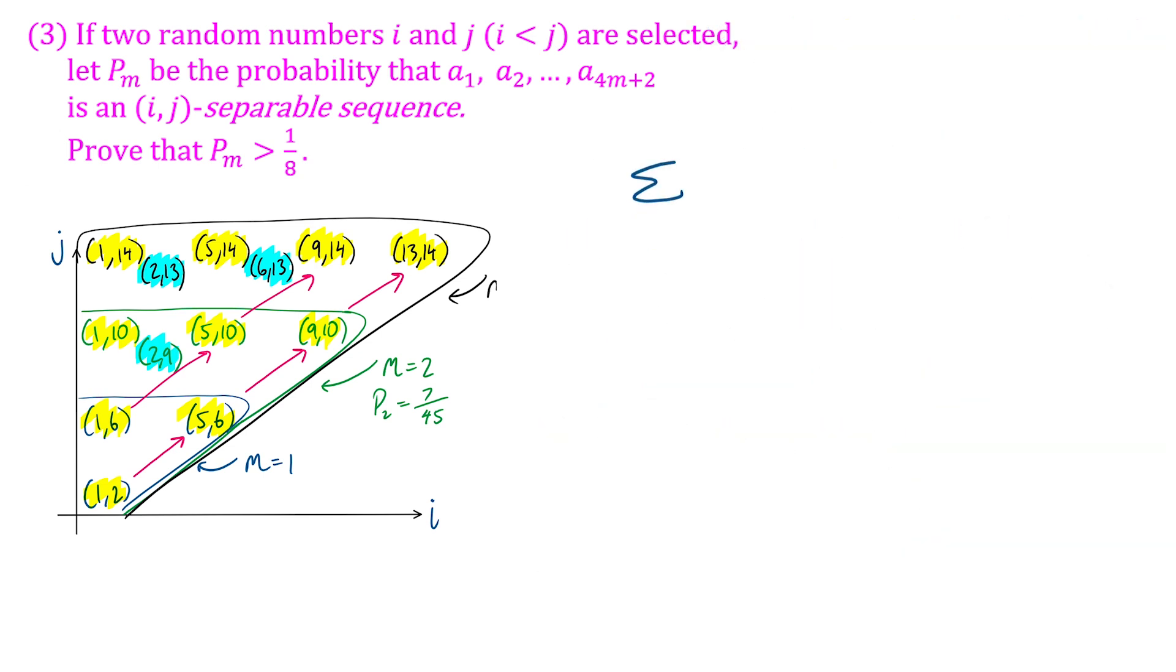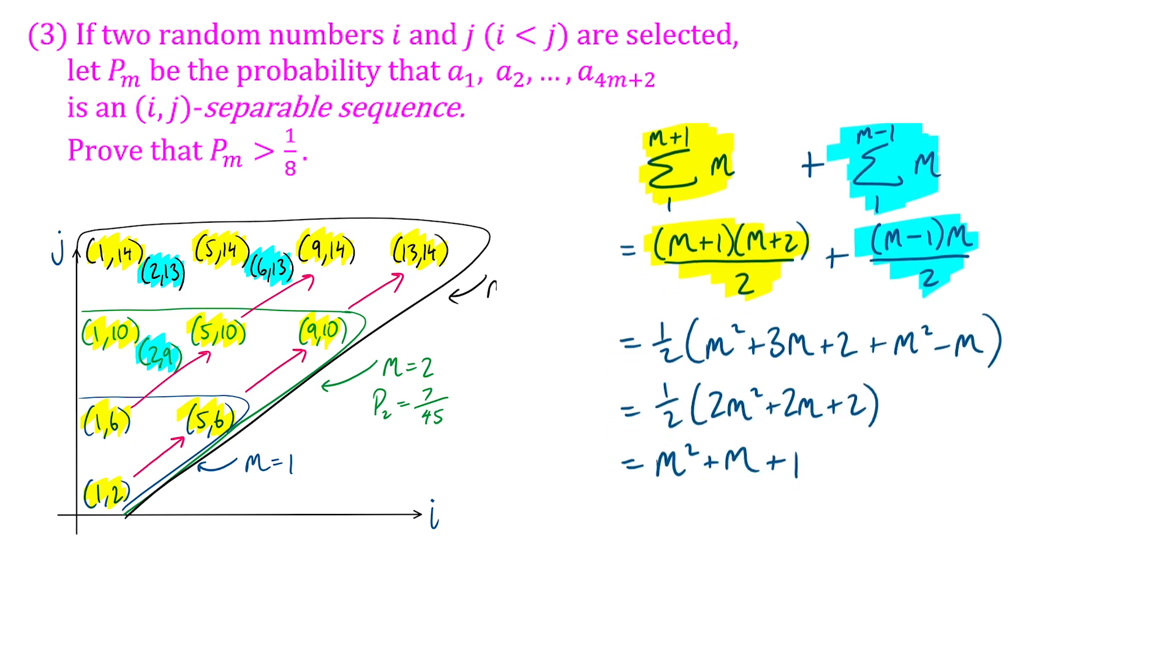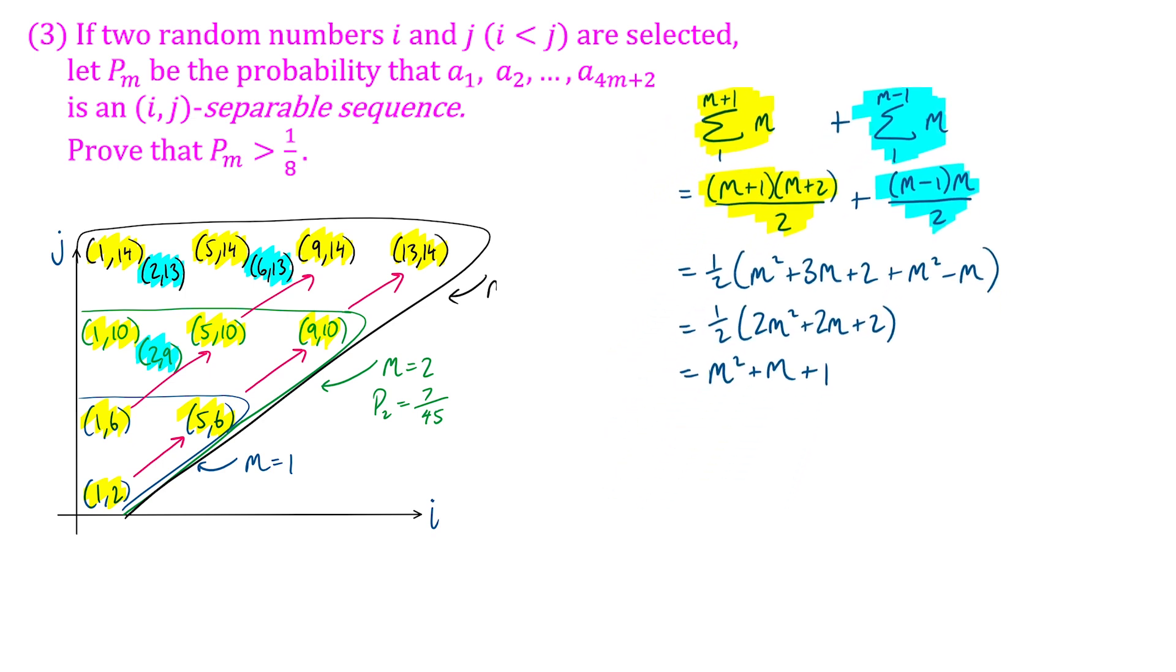Then we can count up our solutions using our triangular numbers formula or sum of consecutive integers. And when we divide that by the denominator we had from above, we find that the fraction we get is in fact always greater than 1 over 8.